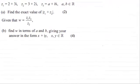Hi there. Now in this question we're given the complex numbers Z1 equals 2 plus 3i, Z2 equals 3 plus 2i, and Z3 equals a plus bi, where a and b are real numbers.